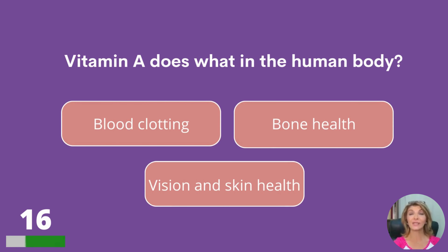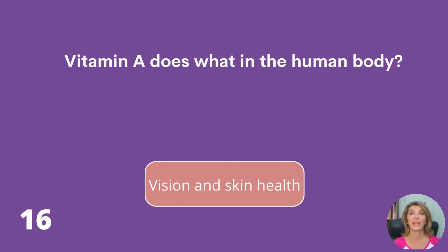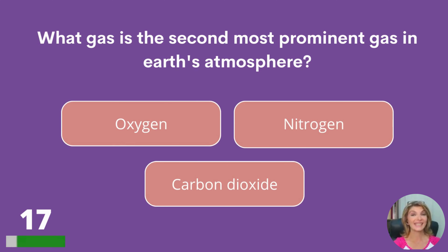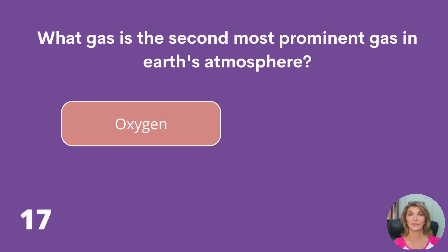Vitamin A does what in the human body: blood clotting, bone health, or vision and skin health? What gas is the second most prominent gas in Earth's atmosphere: oxygen, nitrogen, or carbon dioxide? Oxygen.